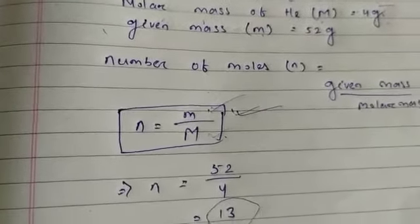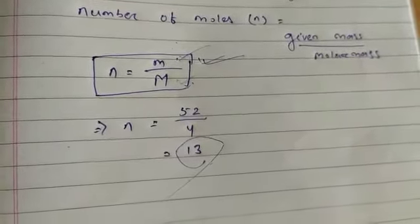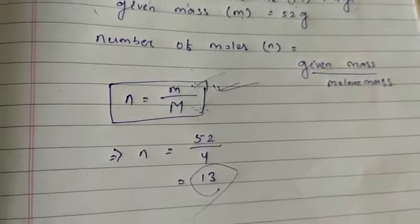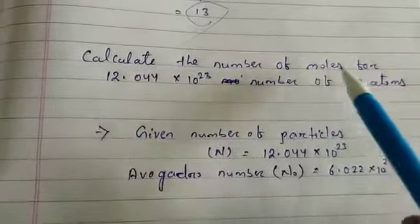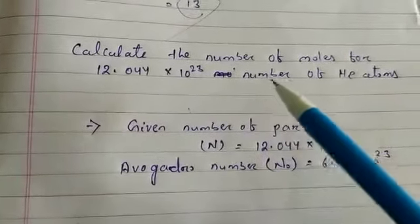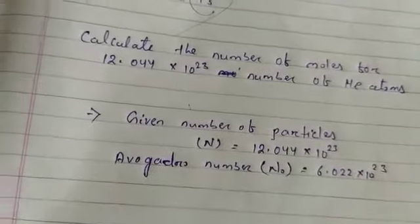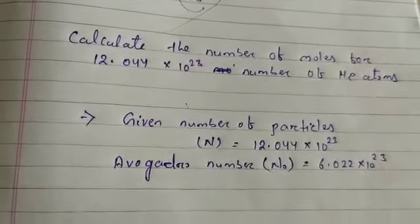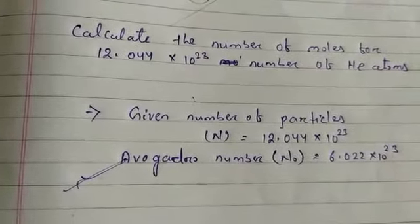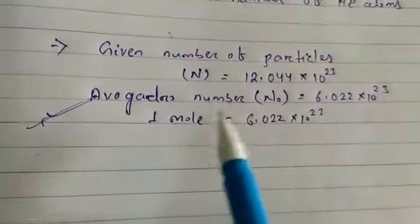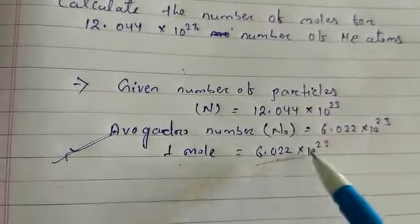The next question: calculate the number of moles for 12.044 × 10²³ helium atoms. Here we will calculate the moles from the number of particles. We know that 1 mole = 6.022 × 10²³ particles, which is also known as Avogadro's number — as we already studied in the previous class.